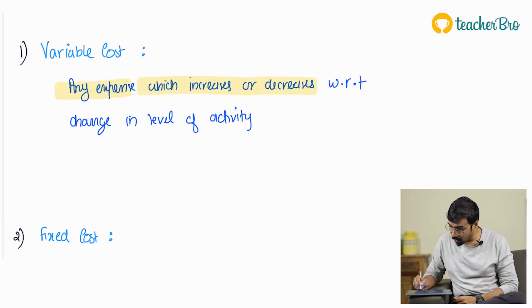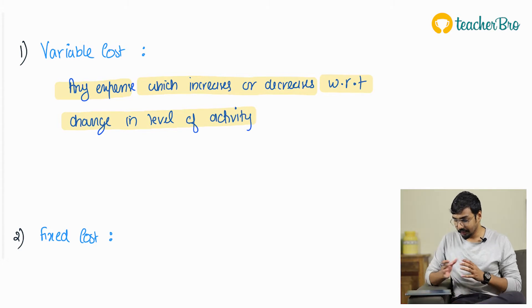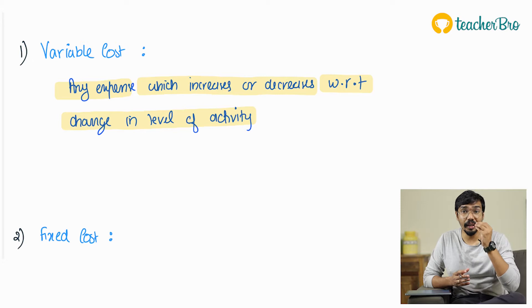In this video we are going to learn what is the difference between variable cost, fixed cost, and semi-variable cost. Normally in marginal costing, costs are classified under variable, fixed, and semi-variable. So in this video we will learn in detail what these costs are. First one: variable cost — any expense which increases or decreases with respect to change in level of activity.